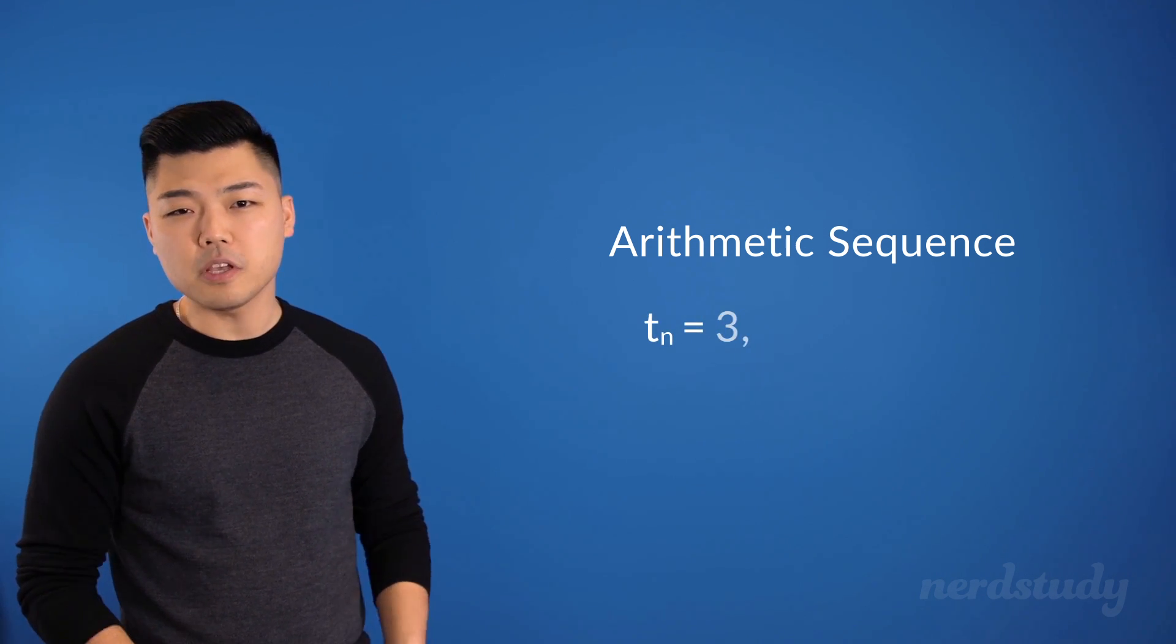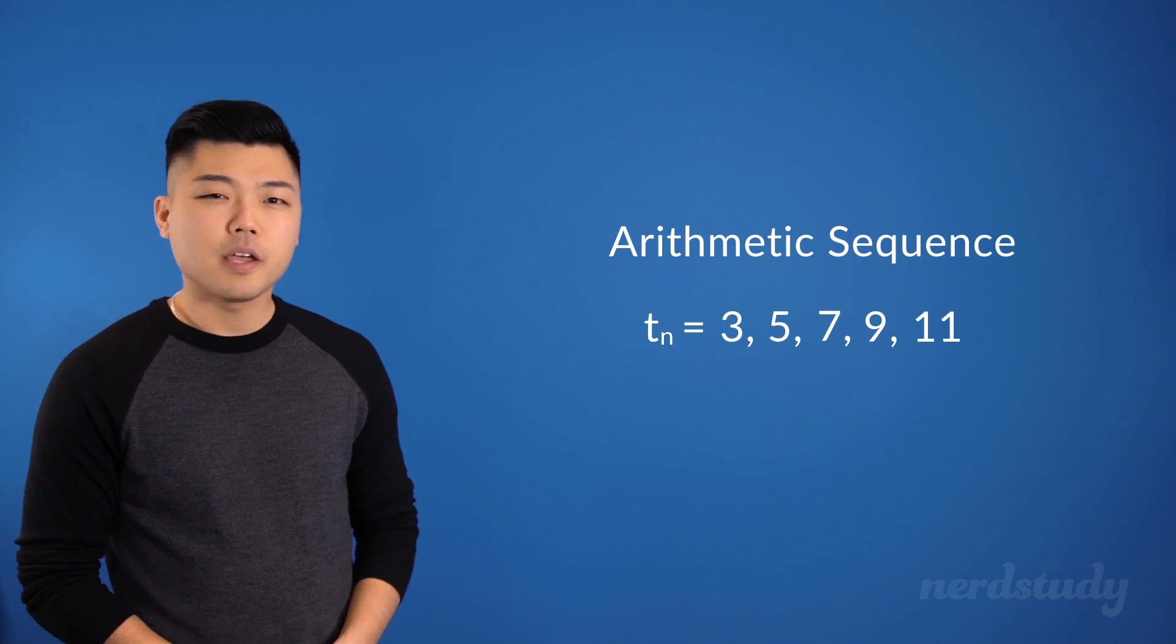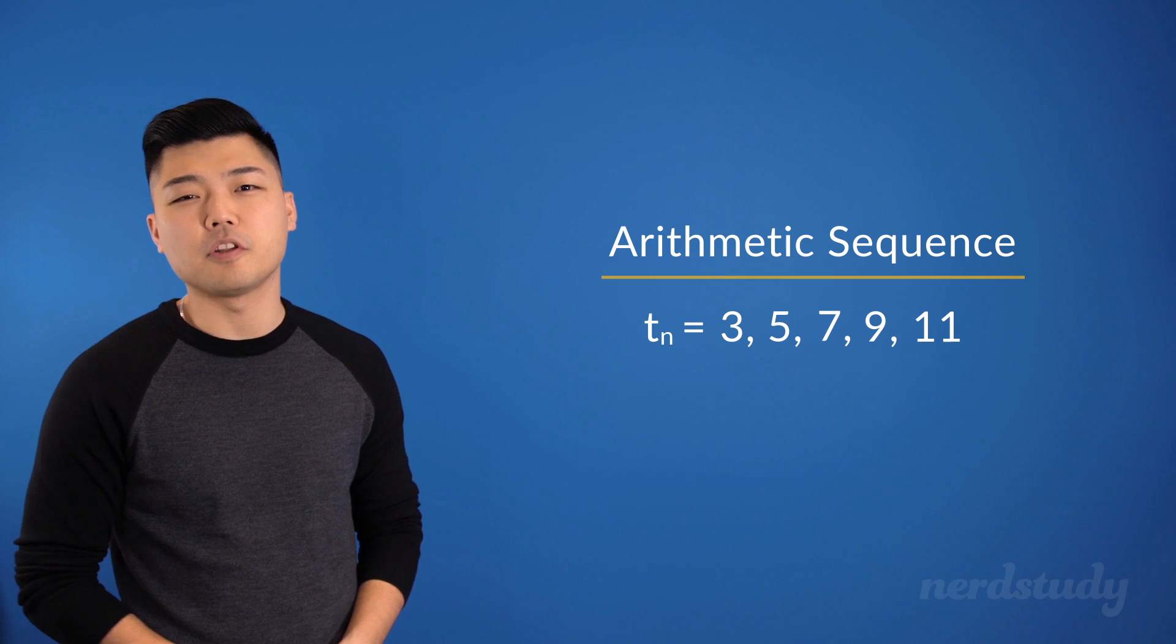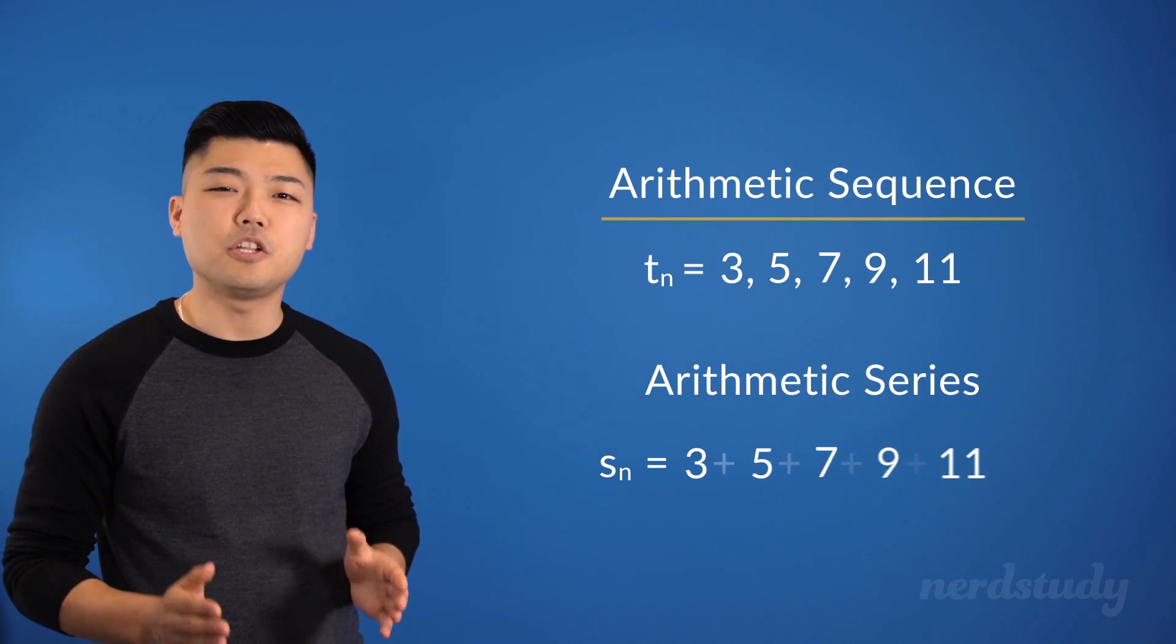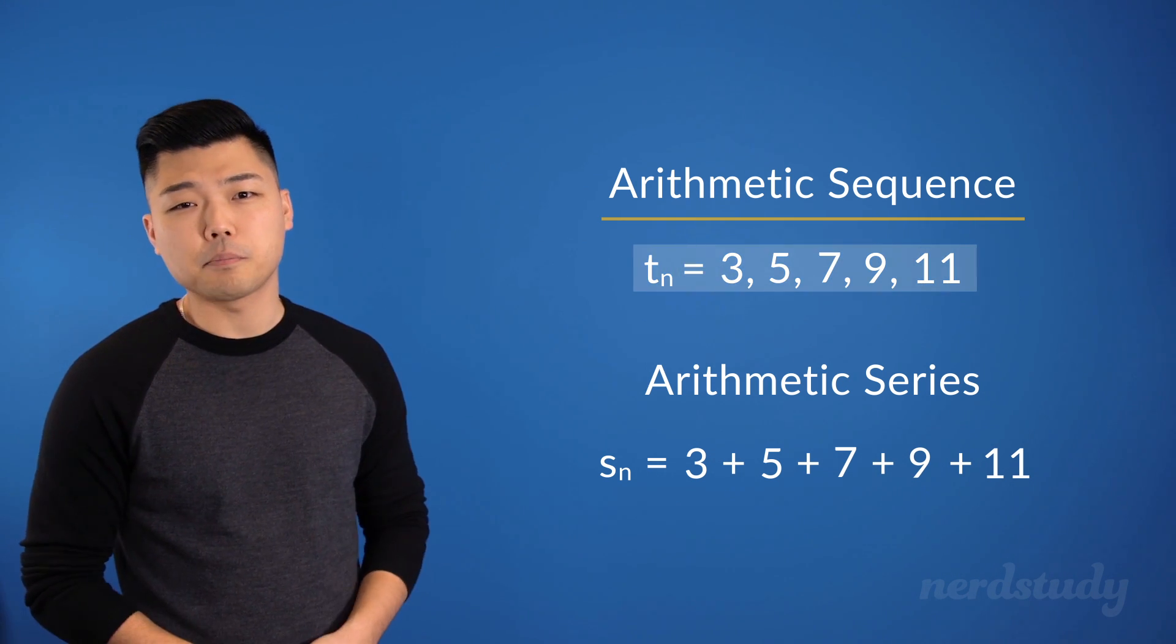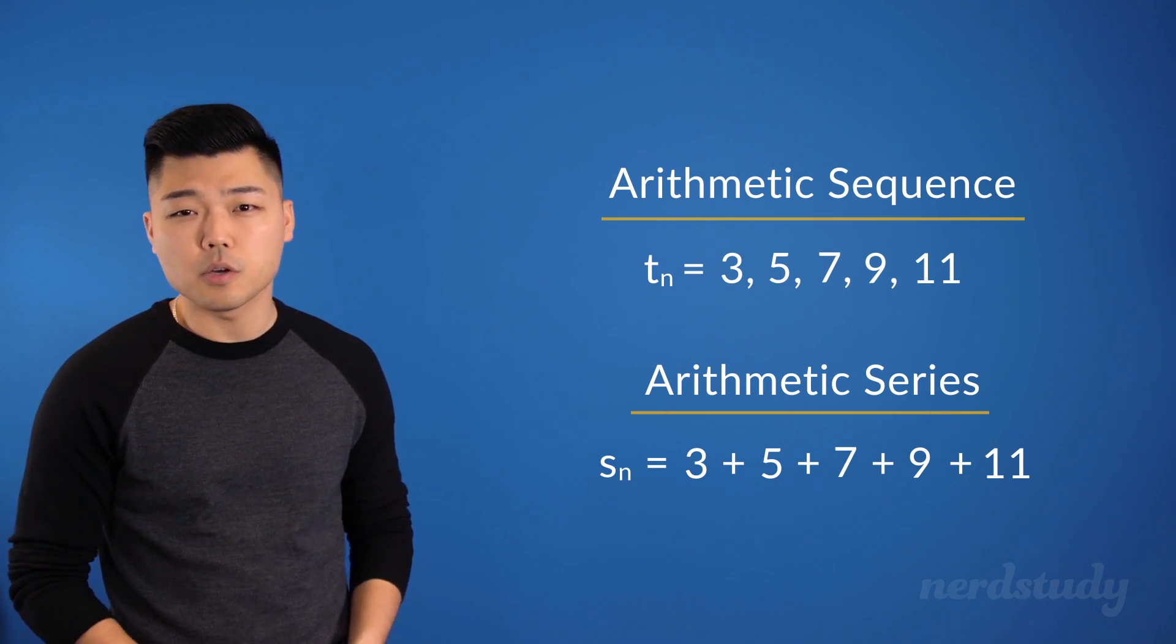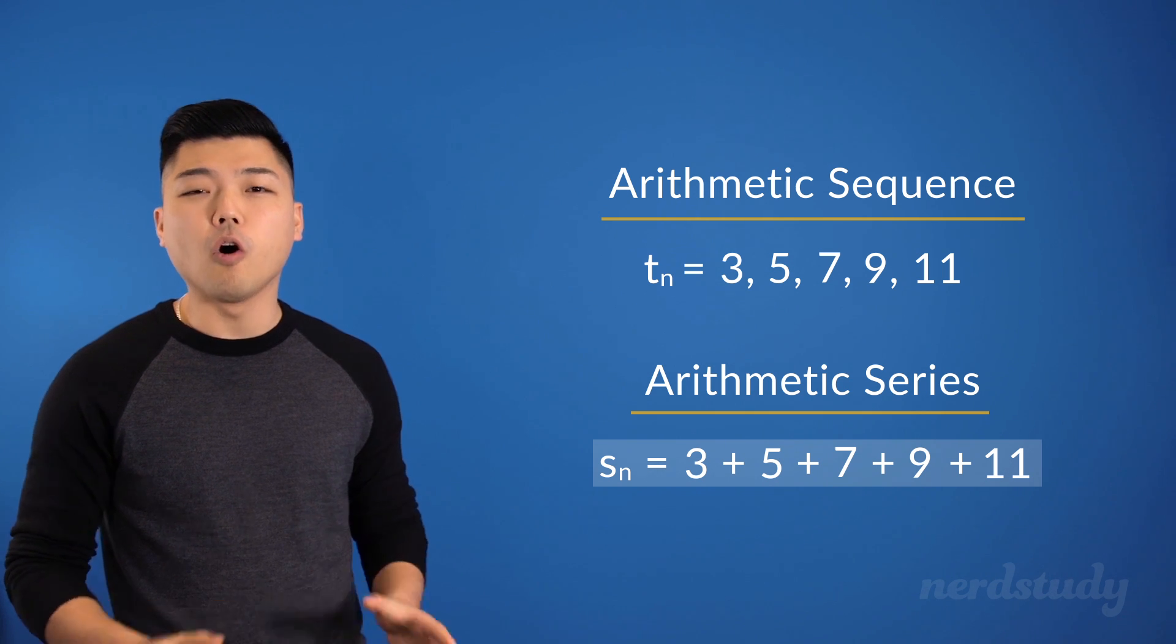Here we've got 3, 5, 7, 9, and 11. Now, a sequence is just a collection or list of numbers. A series, on the other hand, is the addition of a list. So, while this is an example of an arithmetic sequence, an arithmetic series would look like this, which is the addition of all the numbers.